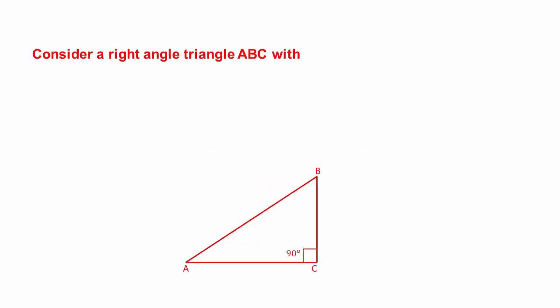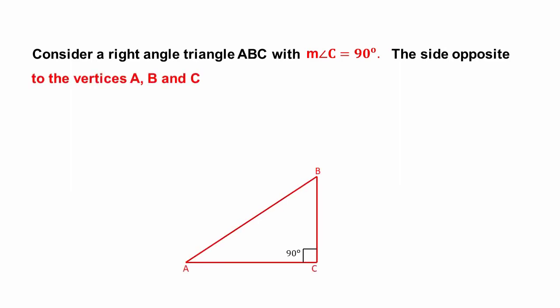We have a right angle triangle ABC, where the measurement of angle C is 90 degrees. The triangle has vertices A, B, and C, and we will find the measurements of angles A, B, and C.